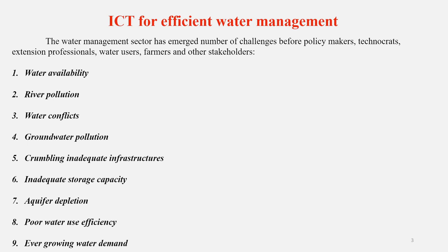The water management sector has faced different challenges over the last few decades — not only for scientists and researchers, but for policy makers, technocrats, extension professionals, water users, and farmers. ICT can play an important role in addressing these issues. For water availability, it can inform stakeholders well in advance whether water will be available for certain activities in a particular area, allowing them to plan contingency measures for the upcoming dry season.